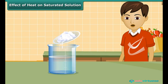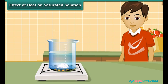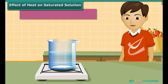Add a small quantity of salt to a saturated solution and heat it. What happens to the undissolved salt at the bottom of the beaker? Yes, it starts dissolving in the solution. Let this hot solution cool. Does the salt reappear to settle at the bottom of the beaker again? Yes, it does. This activity shows that you can dissolve a large quantity of salt in water by heating.